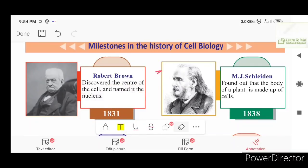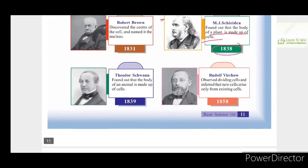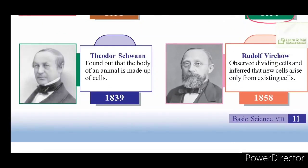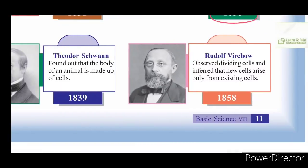The next milestone is 1838. In 1838, Schleiden and Schwann proposed the cell theory. Rudolf Virchow observed dividing cells and inferred that new cells arise only from existing cells.